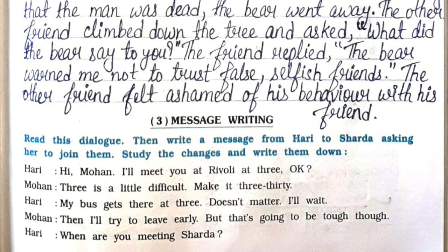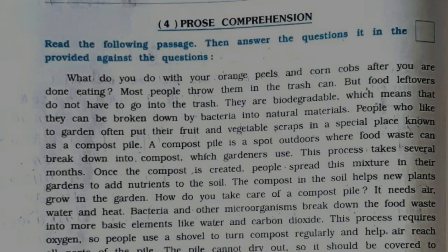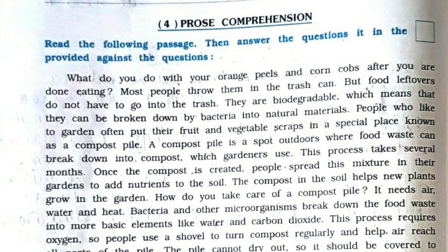Now next is the message writing. Read this dialogue, then write a message from Hari to Sharda asking her to join them. Hari will make a message as: 'Hello Sharda, I and Mohan have decided to meet at Rivoli at 3:30. Mohan wants to meet you too and he was asking if you could join us. Please let me know if you could come. Thank you.' Now next is the prose comprehension — you can see the paragraph.